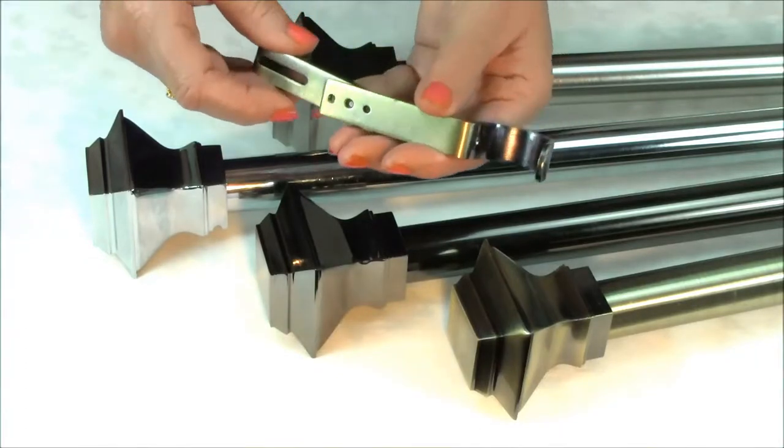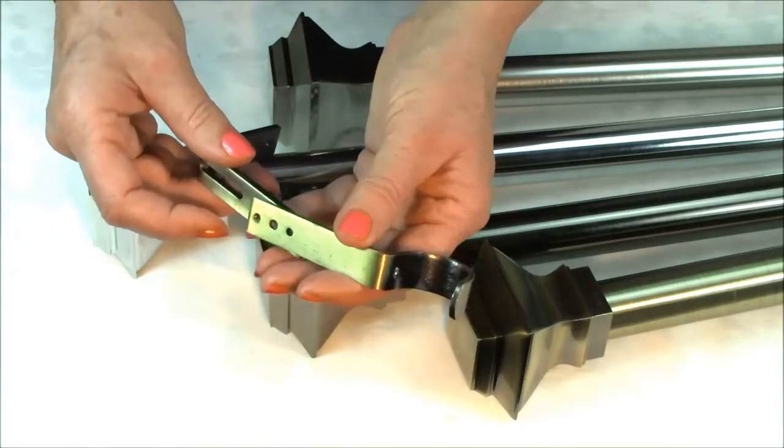The brackets are adjustable to give extra clearance if required between the wall and the curtain pole.